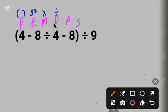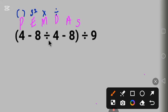Next is multiplication. Multiplication and division are on the same level — they have the same order of priority. So we go from left to right depending on which one came first. Looking at this expression, we have division first, so let's solve that.